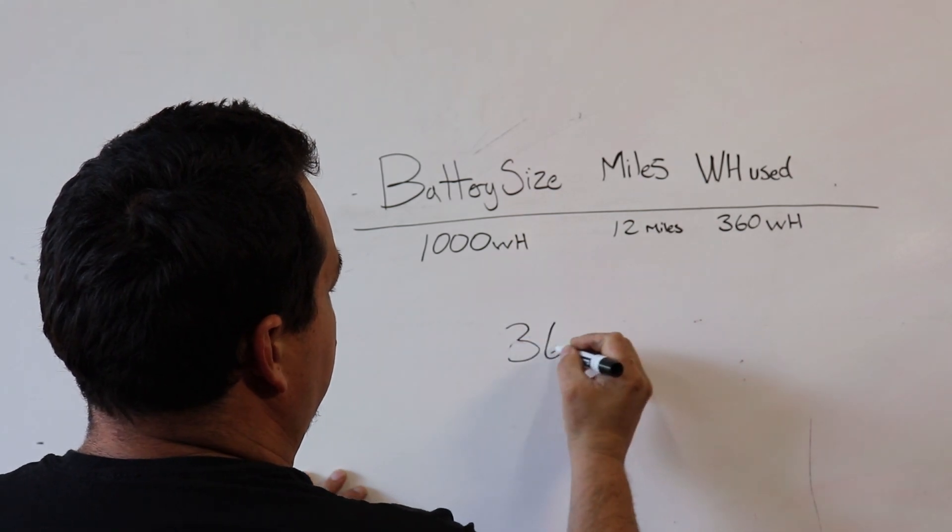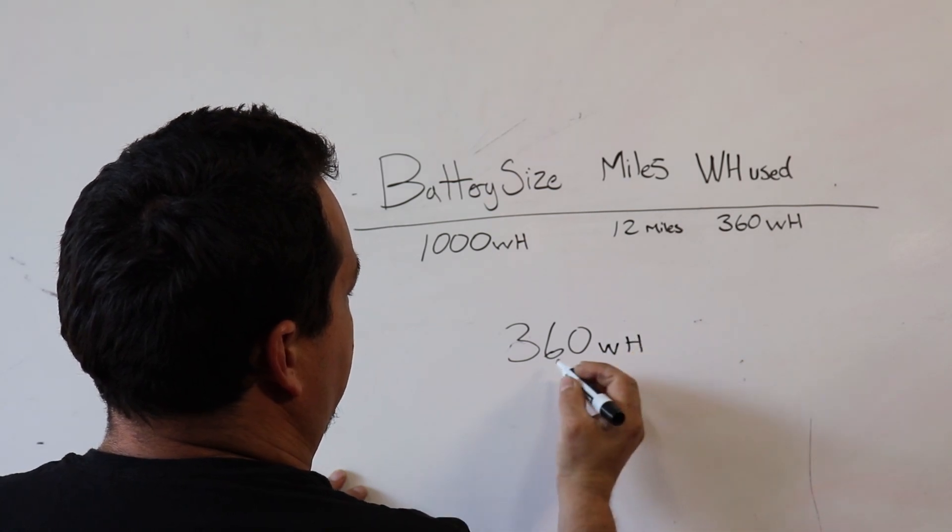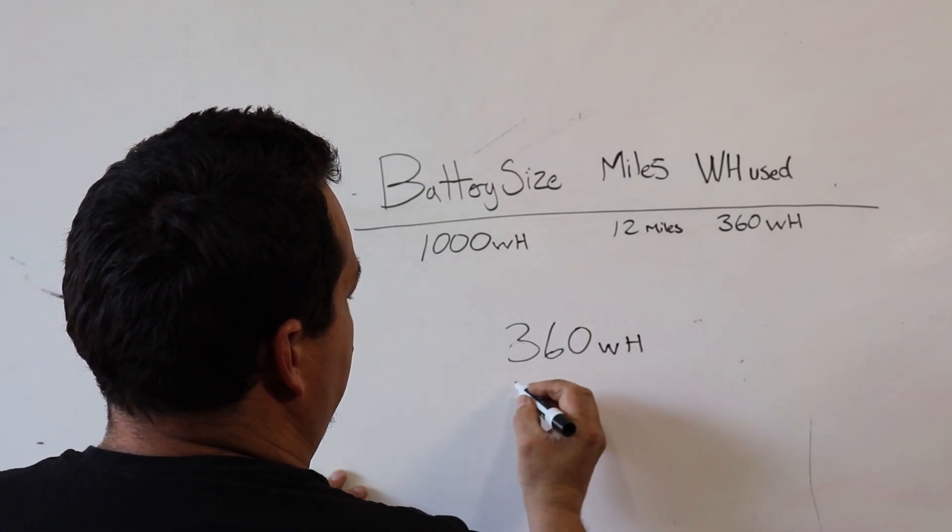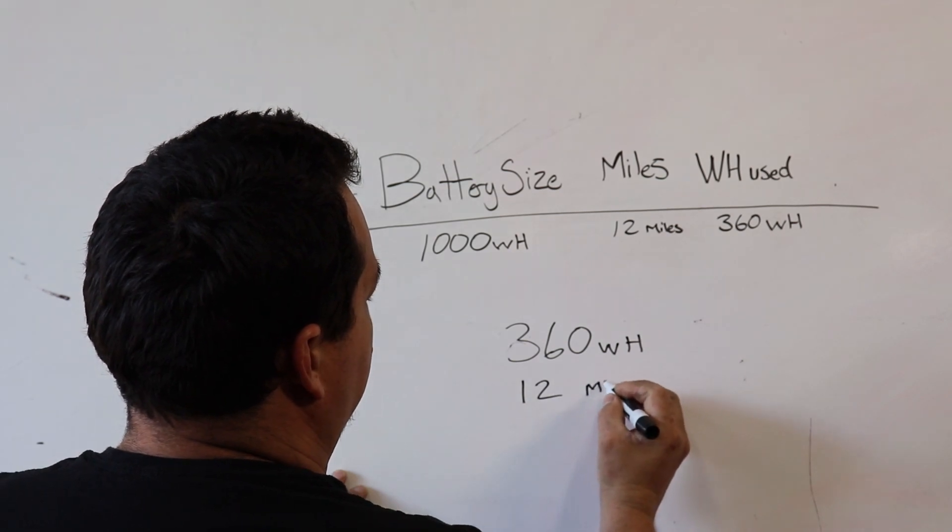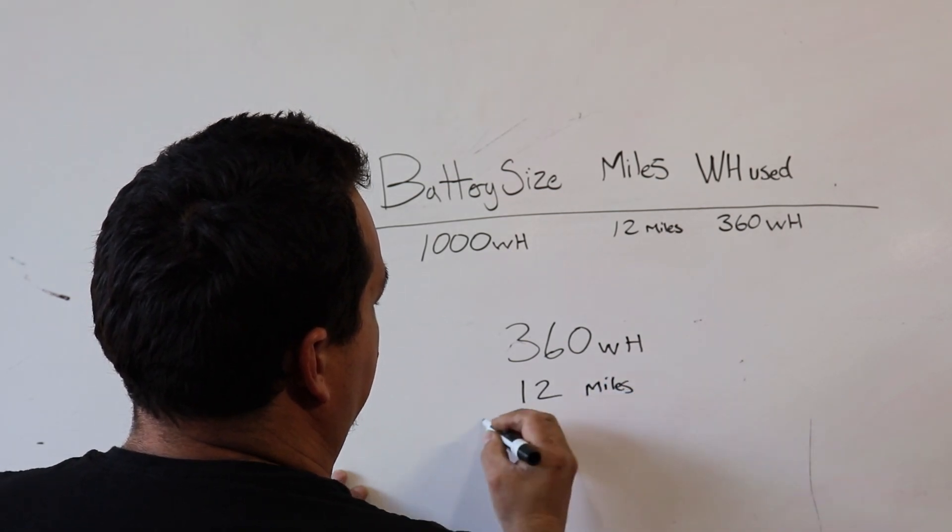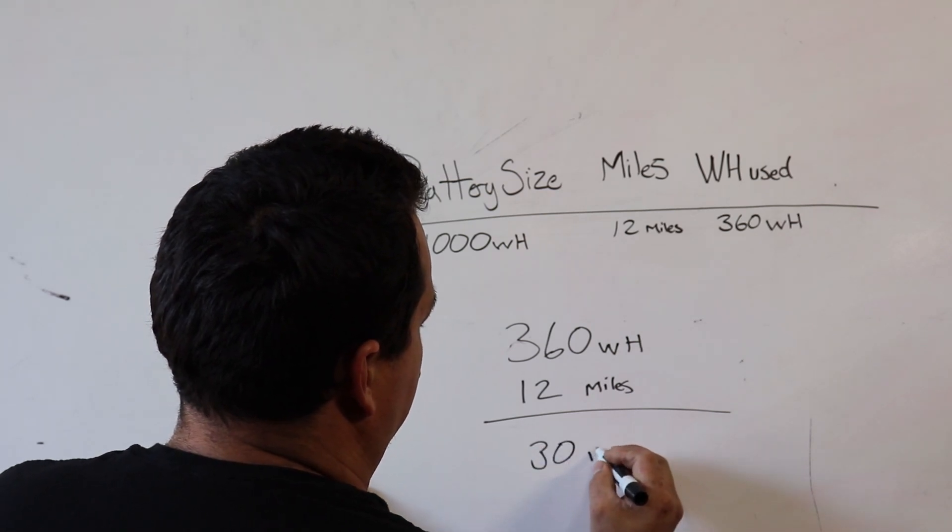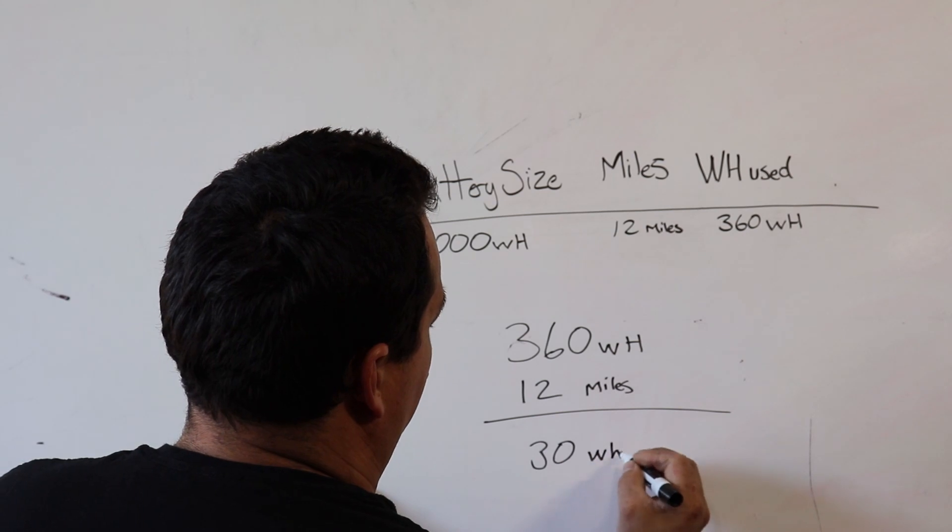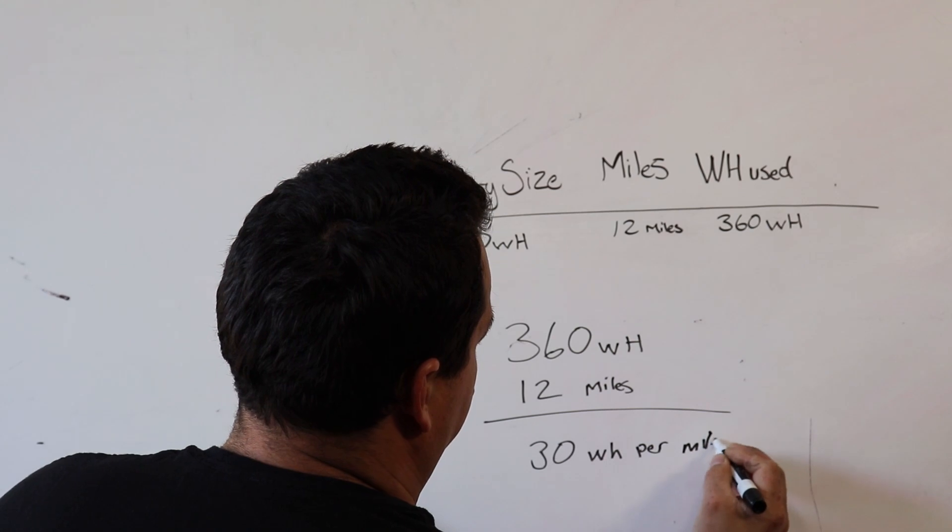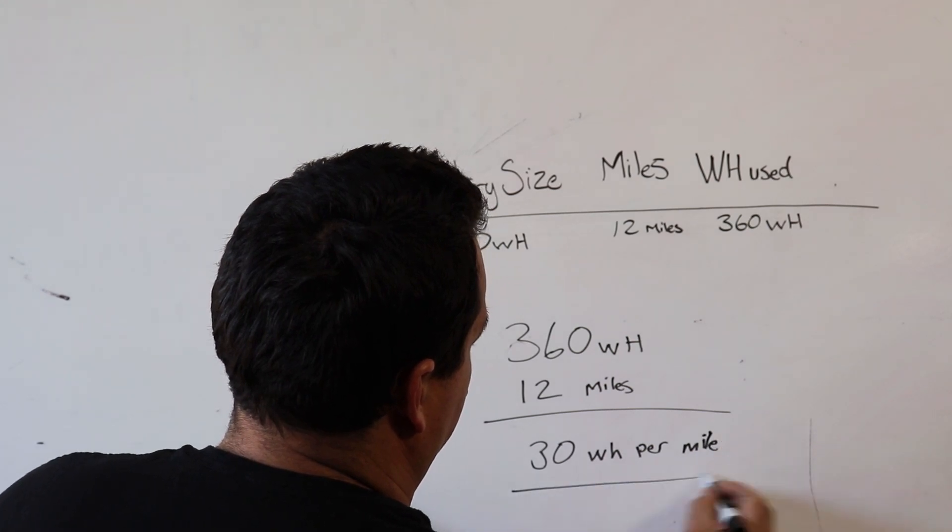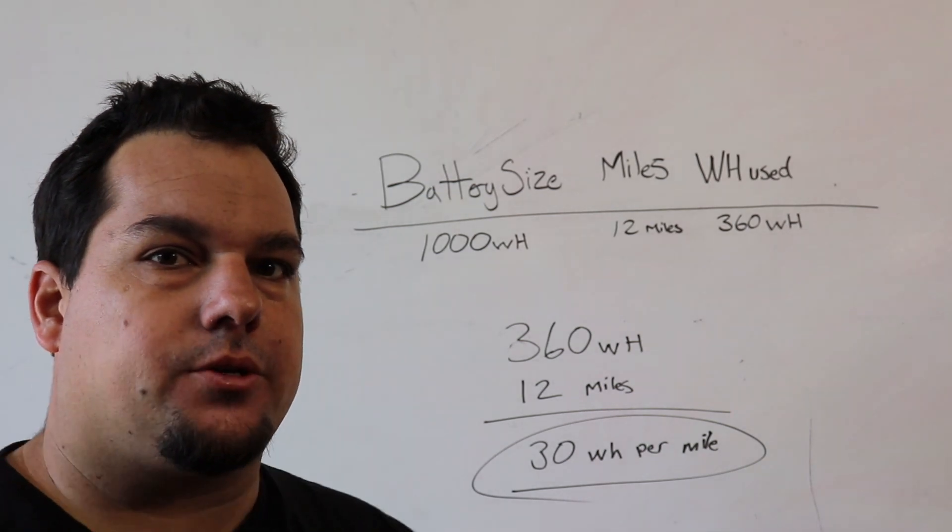So we get 360 watt hours used divided by 12 miles and we get 30 watt hours per mile. 30 watt hours per mile.